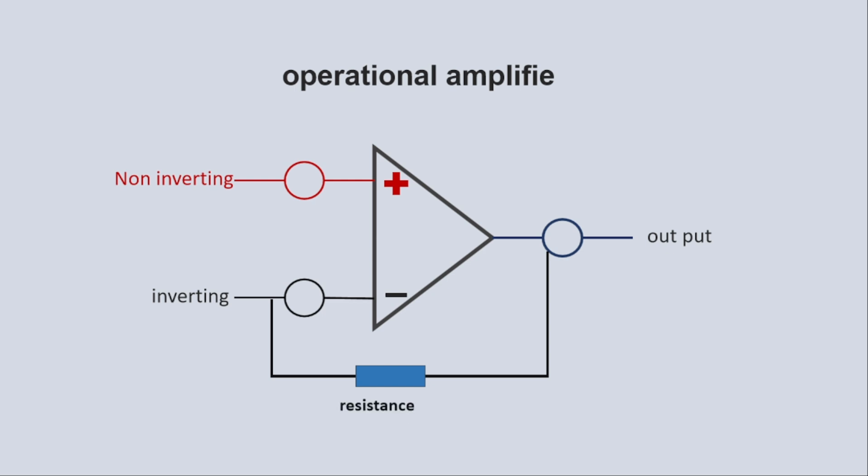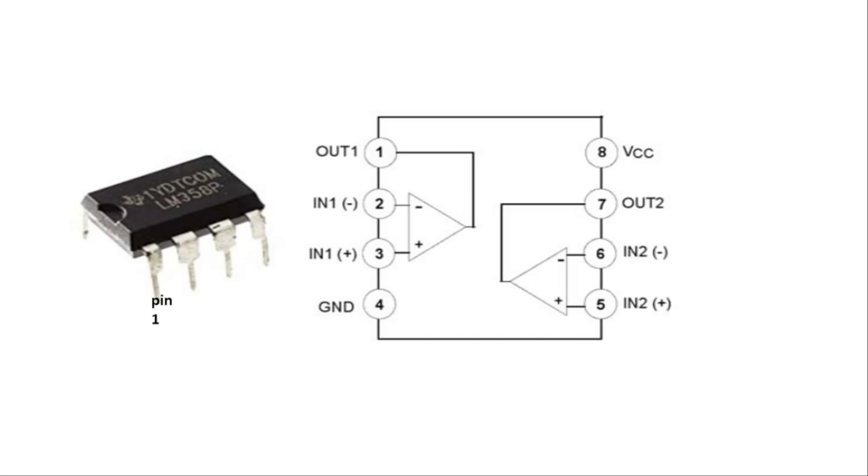Here you have to add resistance, then your output will stabilize and the variation will end. This resistor has to be adjusted according to your signal, so we can see more by connecting it.